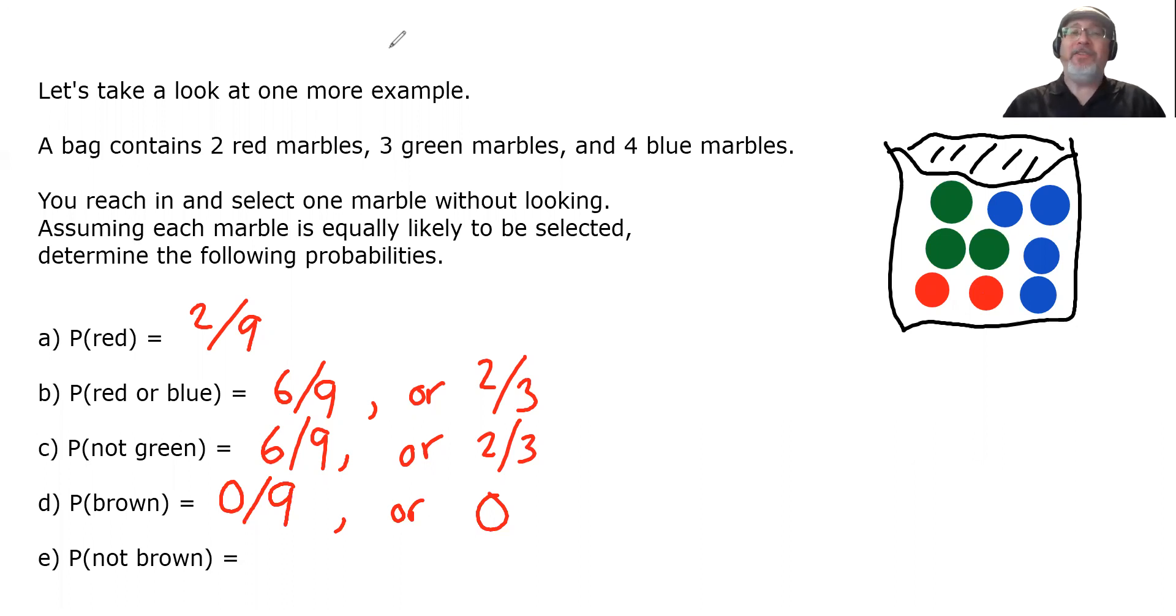What about E, the probability that the marble is not brown? Let's highlight the marbles that aren't brown. Well, out of the nine marbles, how many are not brown? All of them. Nine out of nine are not brown. And as a fraction, that simplifies all the way down to just one. I wonder what it means when the probability is one.